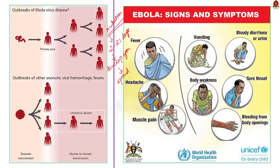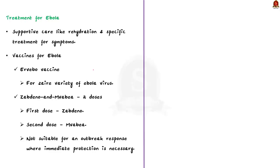According to WHO, a person infected with Ebola cannot spread the disease until they develop symptoms. The symptoms include fever, fatigue, muscle pain, headache and sore throat, followed by vomiting, diarrhoea, and rashes. In some cases, both internal and external bleeding happens as a result of the infection. For treatment, supportive care like rehydration with oral or intravenous fluids is given. In the last couple of years, vaccines have also been developed against the Ebola virus. The Ervebo vaccine has shown to be effective in protecting people from the Zaire Ebola virus species. In December 2020, the vaccine was approved by the US Food and Drug Administration and is pre-qualified by WHO for individuals 18 years of age and older.